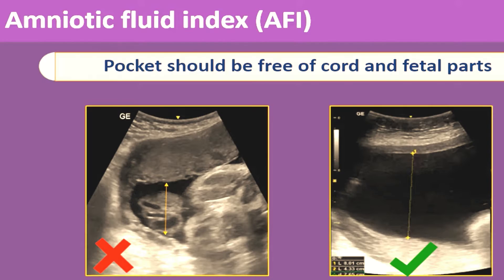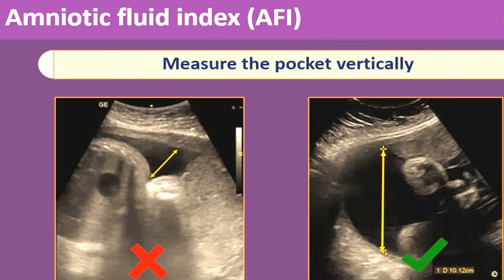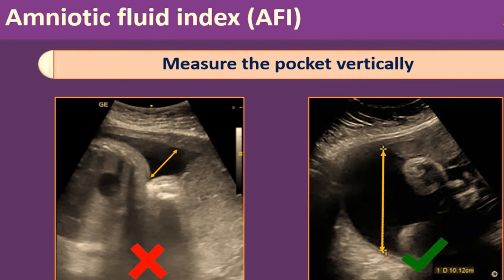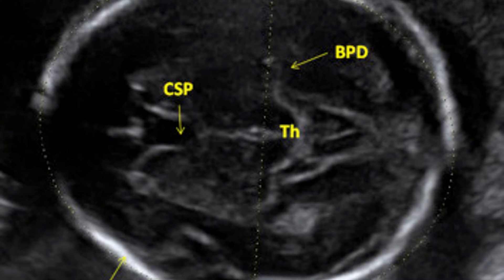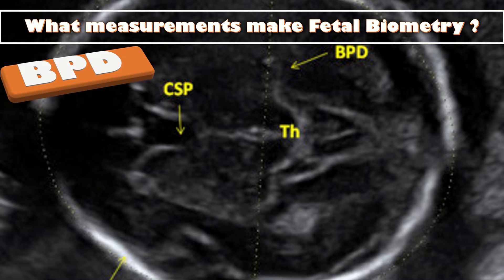Always measure the pocket vertically. After measuring the amniotic fluid volume, it is very important to also perform fetal biometry, in which fetal measurements are obtained using different ultrasound parameters.